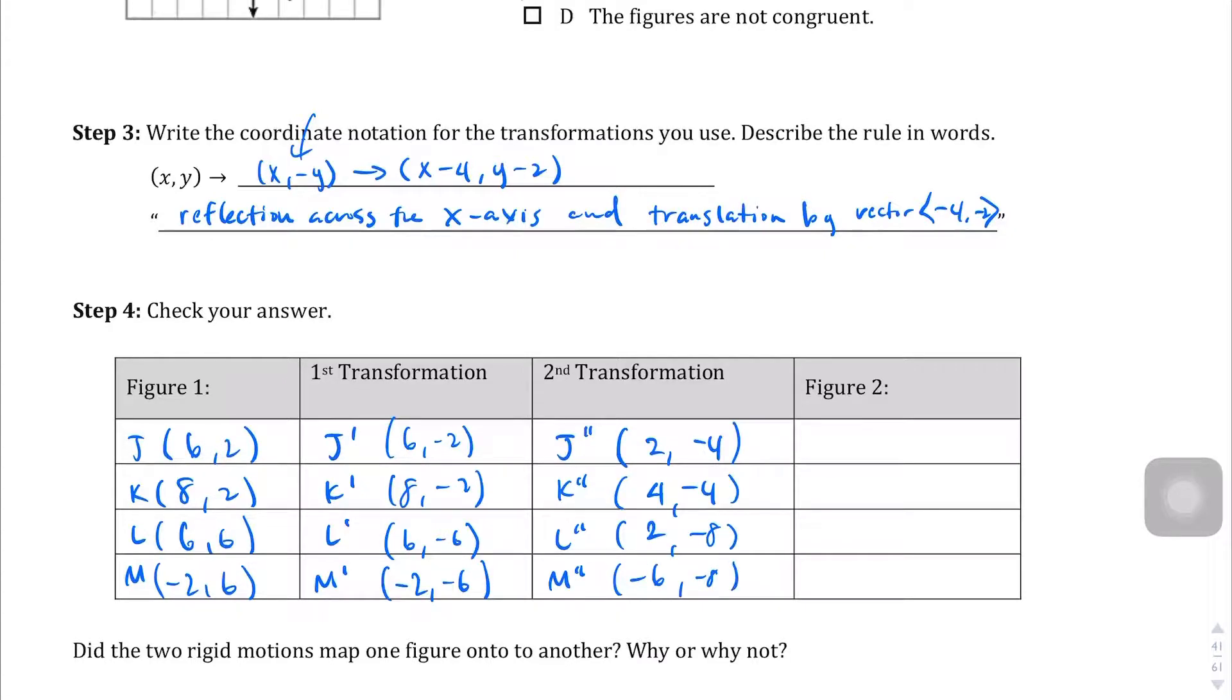I don't know why they put a figure 2, but it's going to be all the same as the other ones, right? Or maybe they wanted W. Yeah, that's what they wanted. I'm lazy, I'm not going to write it again. But W, X, Y, Z are all going to have the same coordinate points as J double prime, K double prime, L double prime, and M double prime.